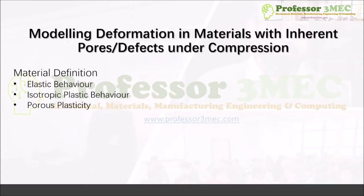In the context of Abaqus CAE, we need to define three different behaviors. First is the elastic behavior — we assume linear elastic isotropic material, requiring Young's modulus and Poisson's ratio. Second is the deviatoric plasticity, using isotropic plasticity behavior, which Abaqus requires if you intend to use porous plasticity. Third, due to porosity, the volume constancy assumption of the yield function is no longer valid, so we must define porous plasticity as the yield criterion.